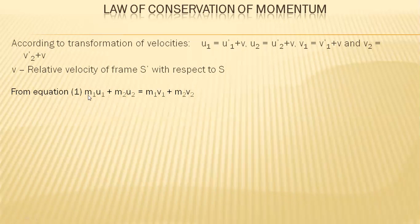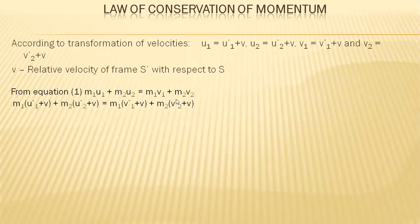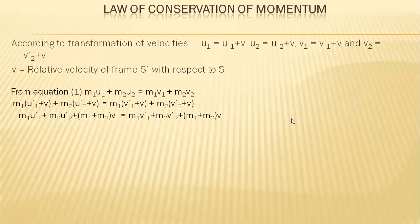According to the Galilean velocity transformation: u1 = u1' + v, u2 = u2' + v, v1 = v1' + v, and v2 = v2' + v, where v is the relative velocity of frame S' with respect to S. Substituting these into equation 1 and simplifying, we obtain m1u1' + m2u2' = m1v1' + m2v2'.